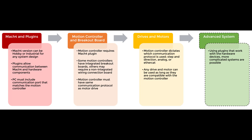Moving on to the drives and motors — to reiterate, your drives must use the same communication protocol as your motion controller. If you've picked out drives that use an analog signal, you need to find a motion controller that will output one. If you picked your motion controller first and it sends out step and direction signals, you need to find drives that will accept that. Any drive and motor can be used as long as they all share the same communication protocol with the motion controller.